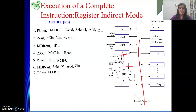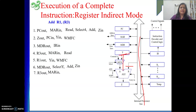The memory write cycle says: give the address, give the data, give the write signal, wait for the operation to complete, and then you can conclude the operation is done. So R3 out and MAR in — first we give the address. Then Z out and MDR in — the address goes into MAR and the data (result from Z register) goes into MDR.